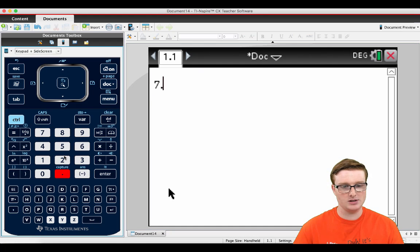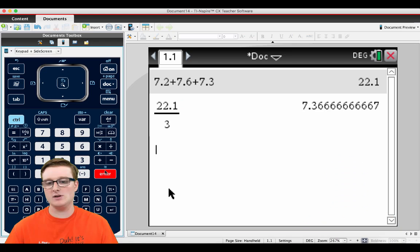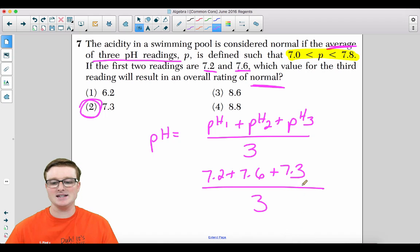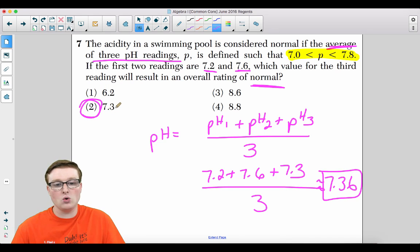If you take 7.2 plus 7.6 and you decide to go right for 7.3, because why not, 7.3 is between 7 and 7.8. So if you do 7.3 and you divide that by three, what would that give you? Well, 7.2 plus 7.6 plus 7.3, you get that number and divide that by three, you get 7.36. That is considered a normal rating because it's in between that interval. Your answer is going to be choice two.